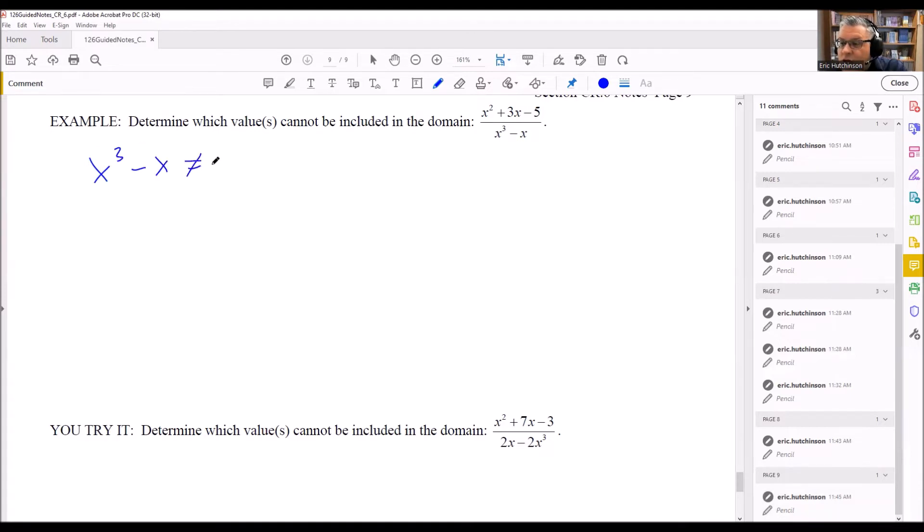So what we're going to do is take whatever is on the bottom, which in this case is x cubed minus x, and set it not equal to zero. It's always what you're going to do for rational expressions like this. You just take the bottom and you put not equal to zero. Then you want to solve this. That's going to tell you what values are not allowed in the domain.